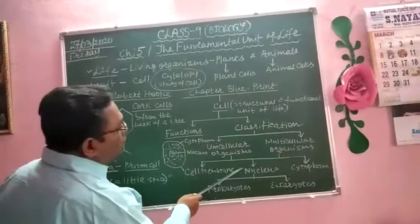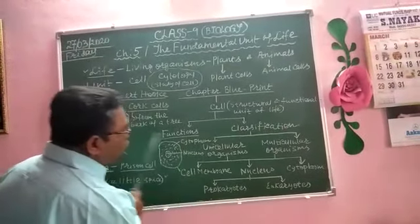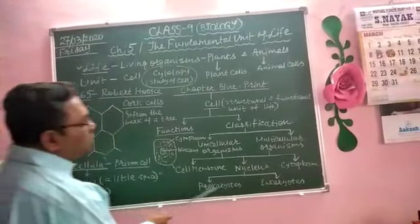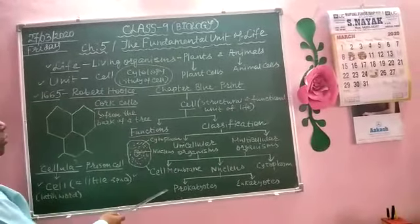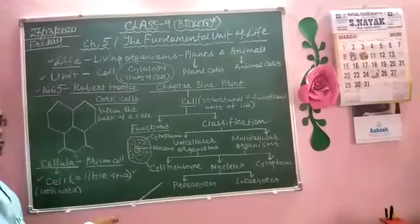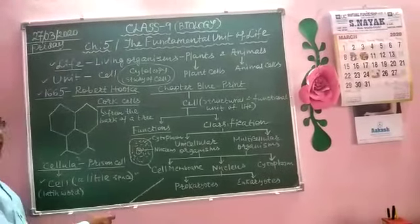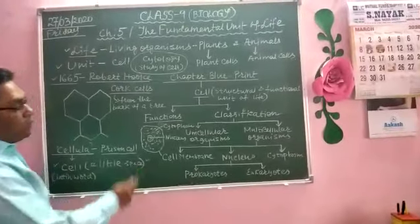Nucleus - according to the nucleus, cells are also of two types, prokaryotes and eukaryotes. Prokaryotes are having old type of nucleus, the nucleus which does not have any nuclear membrane.